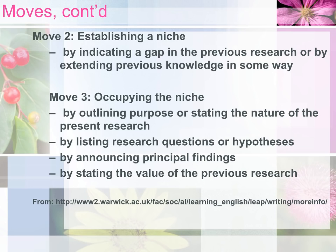The second move is establishing a niche, and this is where the academic writer would say this is where my thesis or paper fits — it's in this gap of previous research, and what my thesis or paper will do is add to or close that gap in some way, extend knowledge. Then the third move is to show how this paper will occupy that niche, and that's generally stating the purpose of this research. So the three moves are: establishing a research territory, establishing a niche, and then occupying that niche.